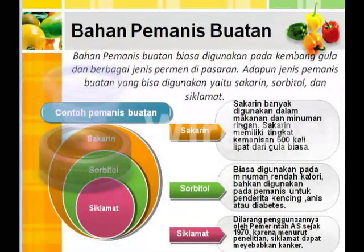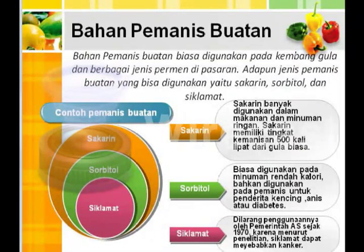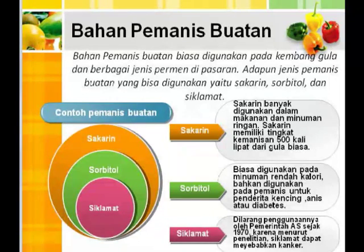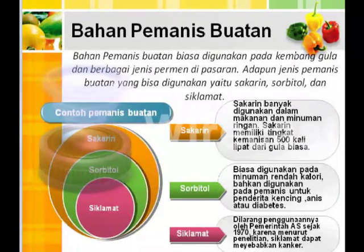Bahan pemanis buatan yaitu bahan pemanis yang biasa digunakan pada kembang gula atau berbagai jenis permen di pasaran. Jenis pemanis buatan yang bisa digunakan yaitu sakarin, yang biasa digunakan pada makanan dan minuman ringan; sorbitol, yang biasa digunakan pada minuman rendah kalori; kemudian ada siklamat, yang penggunaannya telah dilarang oleh pemerintah Amerika Serikat sejak tahun 1970 karena menurut penelitian siklamat dapat menyebabkan kanker.